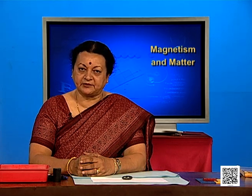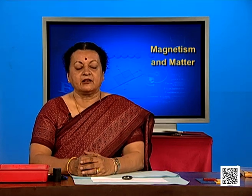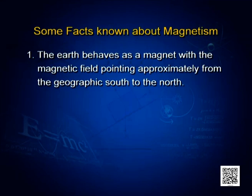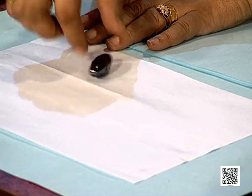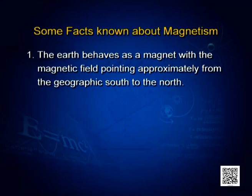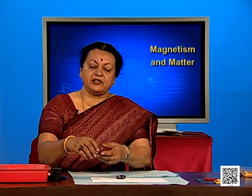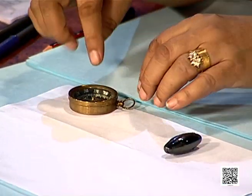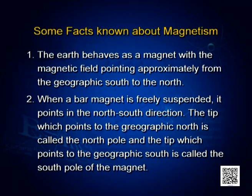Some basic properties of magnets are that Earth behaves like a magnet and it has its field directed from the geographic south towards the north. If you have a freely suspended magnet like a compass needle, the end that points towards the north pole is called the north pole, and the south-seeking pole is called the south pole.